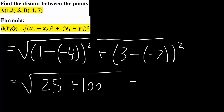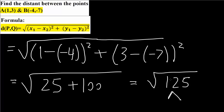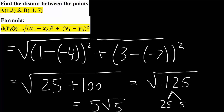What we have right now is the square root of 125. Can we break this out — is there a term whose square root will cancel? We know the square root of 25 is 5, and there is: 125 can be broken down into 25 and 5. So our final answer is 5 square root of 5, because 5 times 5 is 25 and 25 times 5 is 125. This is the distance between the two points.